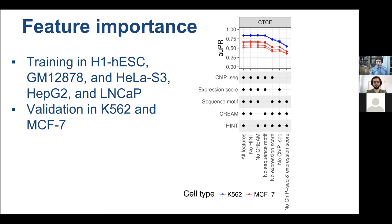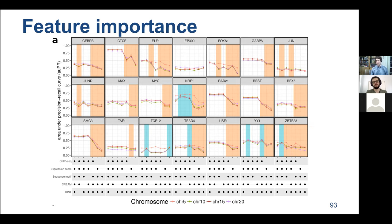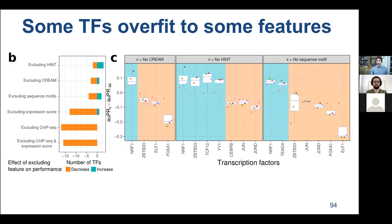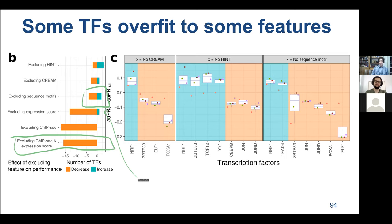This drop in performance when removing ChIP-seq reference data or expression score is fairly consistent across a variety of other transcription factors. Excluding ChIP-seq and expression score from the model leads to worse performance for many transcription factors. Sometimes excluding the sequence motif also hurts performance — but sometimes having the sequence motif in can actually hurt performance.